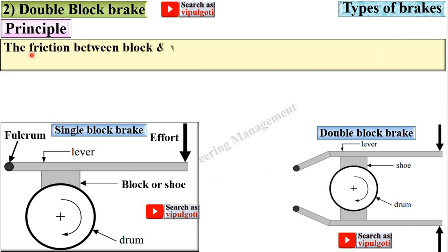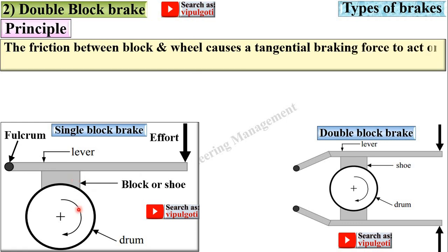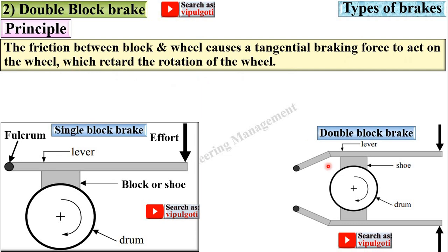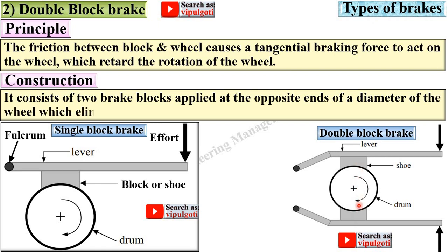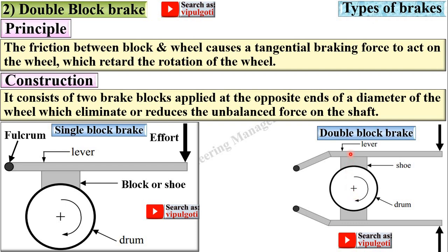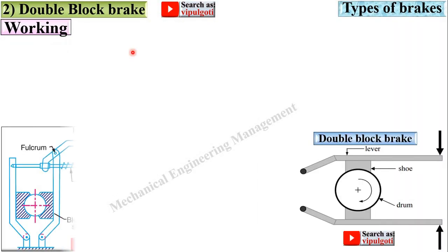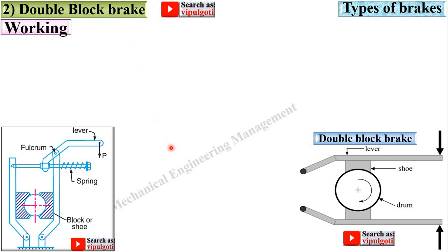Principle: the friction between block and wheel causes a tangential braking force to act on the wheel, which retards rotation. Construction: it consists of two brake blocks applied at opposite ends of a diameter of the wheel, which eliminates or reduces the unbalanced force on the shaft. In the figure you can see the fulcrum points and the two blocks.